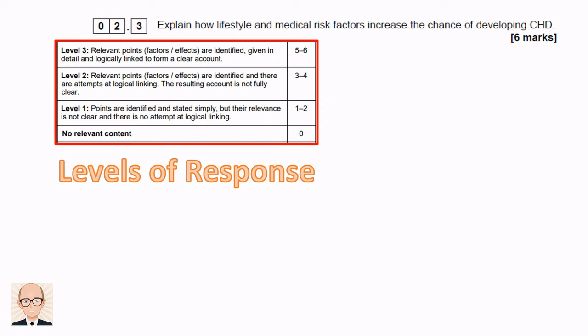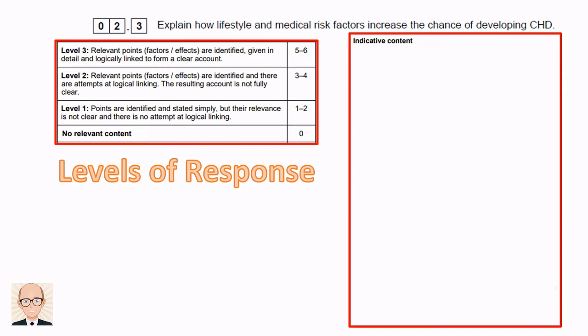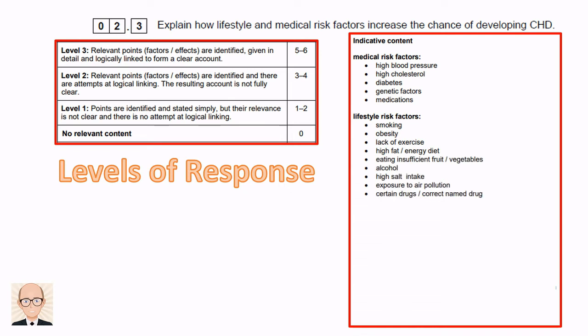To gain the top marks in this question, we need to identify some relevant risk factors and then describe how they lead to coronary heart disease. By giving at least two medical risk factors and two lifestyle risk factors, and clearly stating how they lead to coronary heart disease in a well-written way, we should be able to gain all six marks. There are medical risk factors we could choose from, and there are lifestyle risk factors. We don't need to write about all of them, just two from each section.